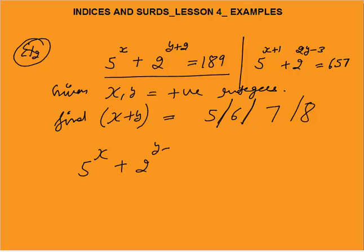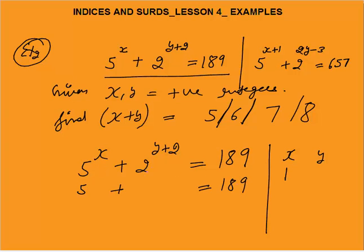I will take 5^x · 2^(y+2) and try to get 189. Taking the minimum value of x as 1, since x and y are positive integers: 5^1 = 5. We need 189 - 5 = 184. No power of 2 makes 184, so x = 1 is not the right solution.